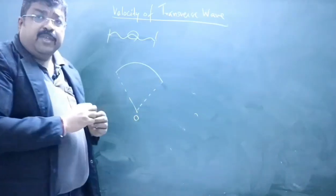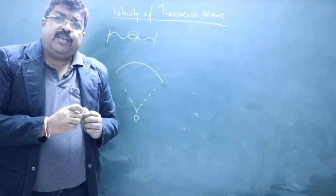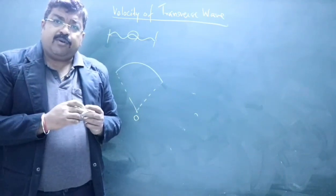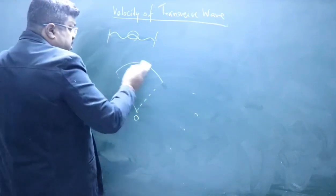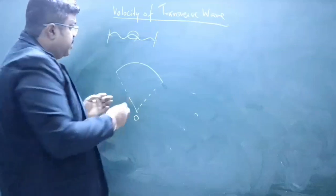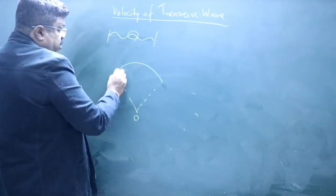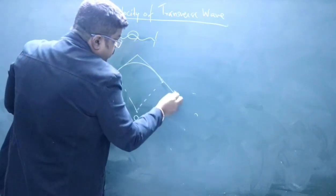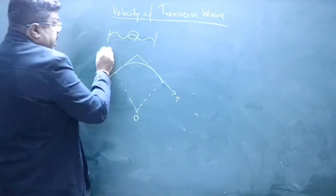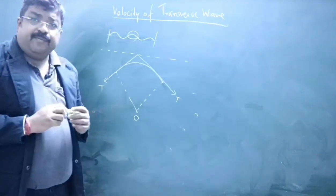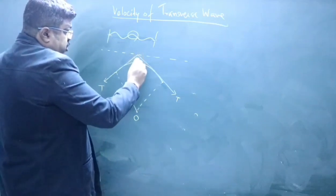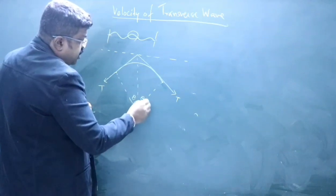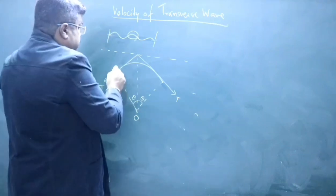For this arc, suppose this is the center. As we know, in a string the tension is always tangential to the length of the string, and it is the same at each and every point. Since the string is identical, tension will be tangential. I'm calculating tension at two points by drawing two tangents — this is tension T and this is tension T. Due to symmetry, this angle is theta and this angle is also theta.